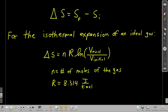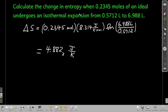Now, when a system undergoes a change, the change in entropy is the entropy of the final system minus the entropy of the initial system states. And for a very specific instance which we do look at, the isothermal expansion of an ideal gas—isothermal just means the temperature doesn't change, it's going from a smaller volume to a larger volume—the change in entropy is equal to n, which is the number of moles of the gas, times R, which is 8.314 joules per Kelvin mole, times the natural log of the final volume over the initial volume. So remember this equation and remember what it's for. It's only for the isothermal expansion of an ideal gas. For example, we can calculate the change in entropy when 0.2345 moles of an ideal gas undergo an isothermal expansion. Just plugging into that equation, we get a change in entropy of 4.882 joules per Kelvin.